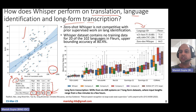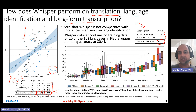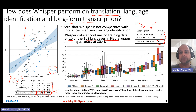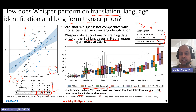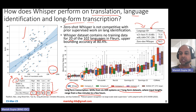For language identification, zero-shot Whisper is not as strong compared to established supervised methods. Note that Whisper is at a disadvantage because its pre-training data did not include 20 out of the 102 languages in the FLEURS dataset used for evaluation. For long-form transcription with input lengths ranging from a few minutes to a few hours, Whisper was compared with several commercial systems on seven long-form datasets, and in each case Whisper outperforms many commercially available speech recognition softwares.